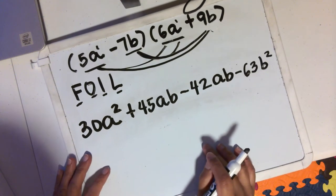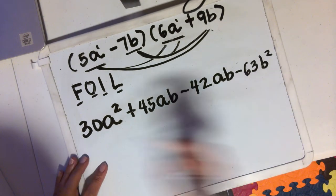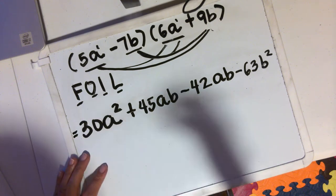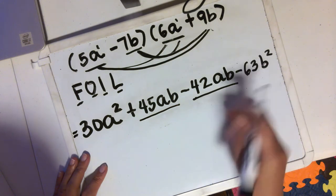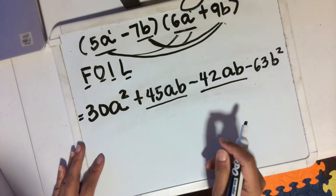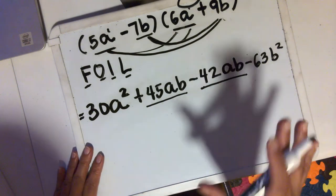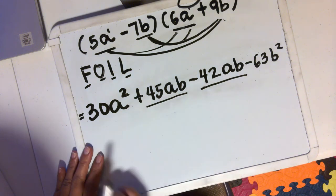Again, laws of exponents. From here, we will simply look for like terms. Now notice that 45ab and -42ab both have ab attached to them. So that means they are like terms.